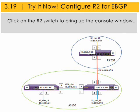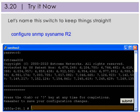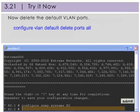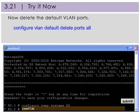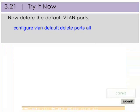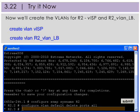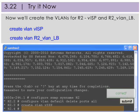Now you'll practice by configuring the second switch, R2, for eBGP operation. Click on R2 to bring up the console window. Since each switch needs basic configuration, let's name this switch to keep things straight. Now delete the default VLAN ports. Now we'll create the VLANs for router 2: VISP, as eBGP normally connects to an ISP, and R2_VLAN_LB, the VLAN on the loopback interface we will use to simulate other networks behind this router.